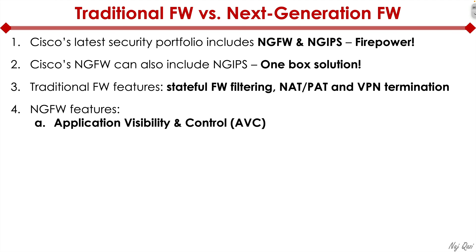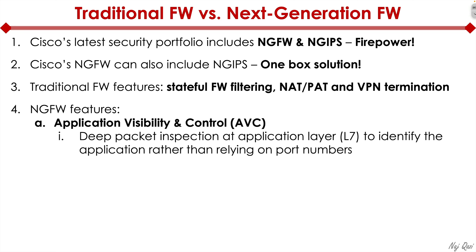With the next-generation firewall, the first feature is application visibility and control. This is a deep packet inspection engine built into the next-generation firewall that does deep analysis at Layer 7 — the application layer — with the sole purpose of identifying the application rather than relying on port numbers. Because as we saw, statically defined port numbers are easy for bad guys to get around. Many new applications also use dynamic port numbers, so you absolutely need this functionality to protect your network.